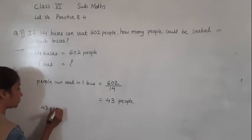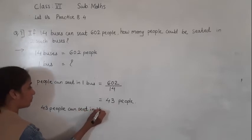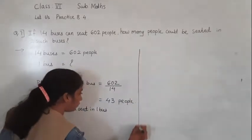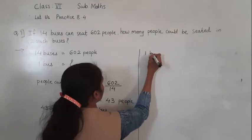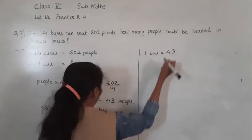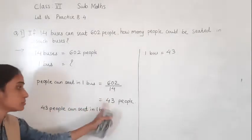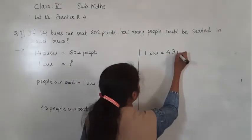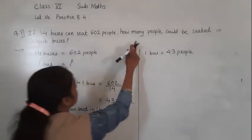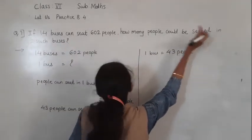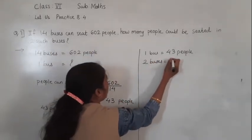43 people can sit in 1 bus. Now we got: in 1 bus, 43 people can sit. The question is asking how many people could be seated in 2 such buses. So we have to find in 2 buses how many people can sit.